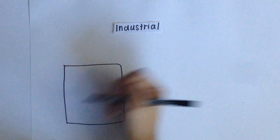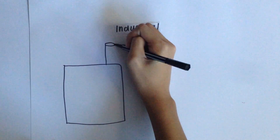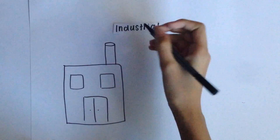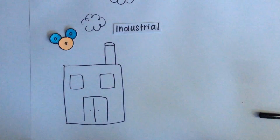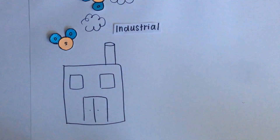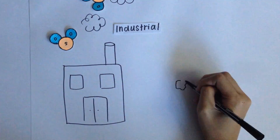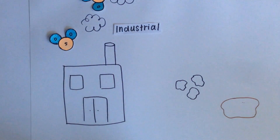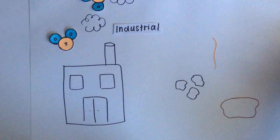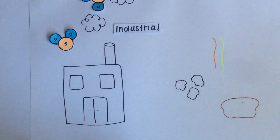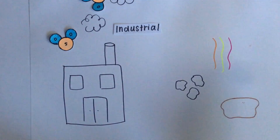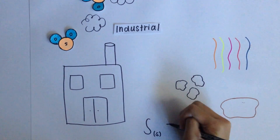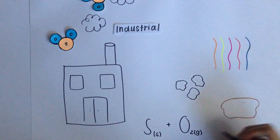Industrial sources include emissions from industrial facilities and fossil fuels combustion. Coal, crude oil, and natural gases are fossil fuels and they contain sulfur. When burnt, sulfur is converted to sulfur dioxide.